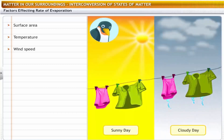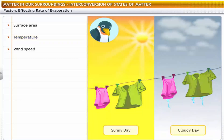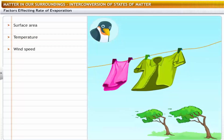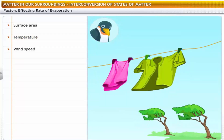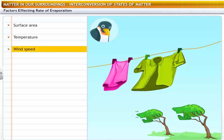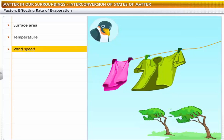Evaporation also depends on the temperature of the surroundings. Clothes dry faster on a sunny day than on a cloudy day. Thus, evaporation is faster at higher temperatures. Clothes also dry quicker on a windy day — this is because of the speed of wind. The particles of water move quickly, reducing the amount of water vapor in the surroundings.